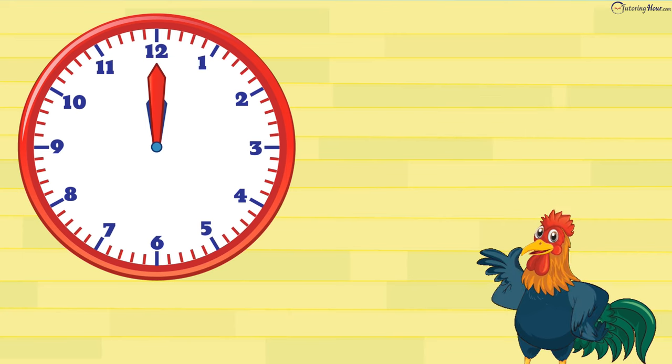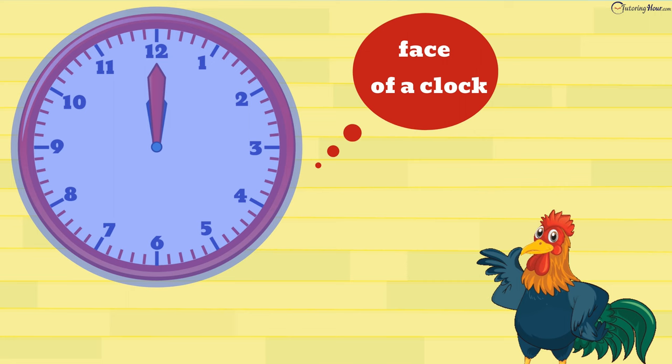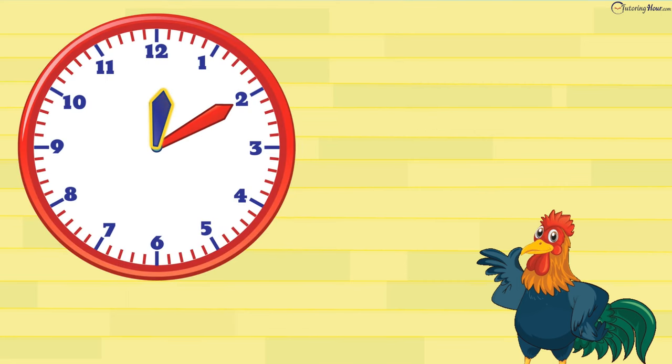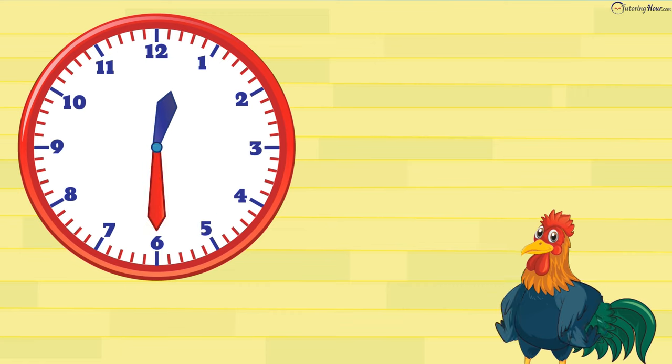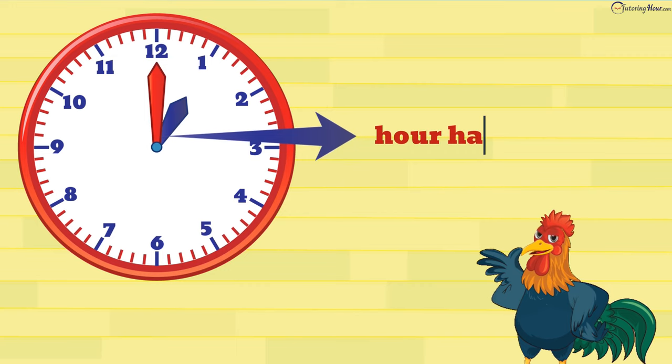Let's take a look at the analog clock. This whole thing is called the face of a clock. It has two hands, a short hand and a long hand. The short hand tells what hour it is, and it is called the hour hand. The long hand is called the minute hand.